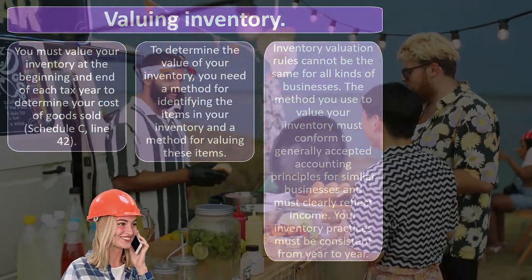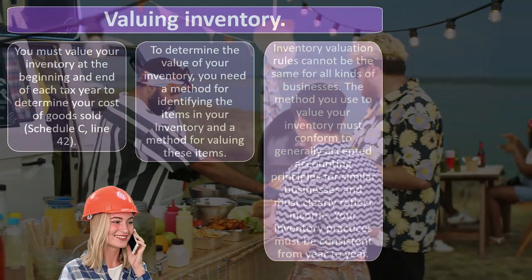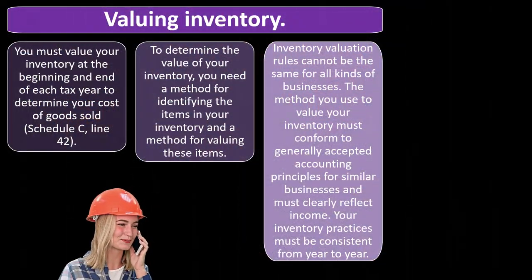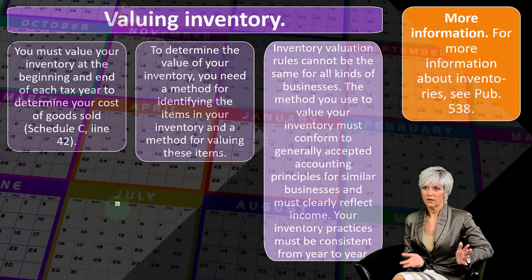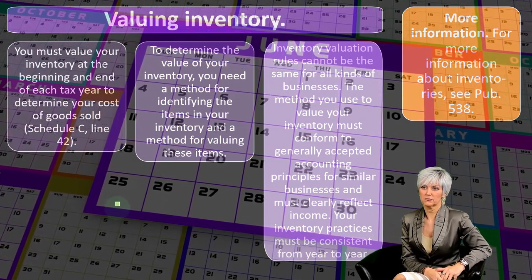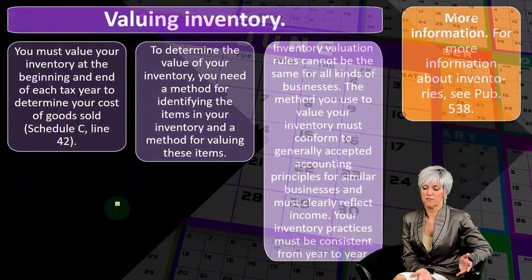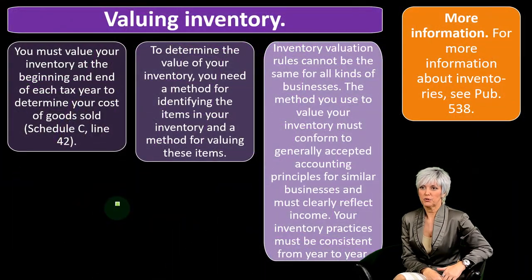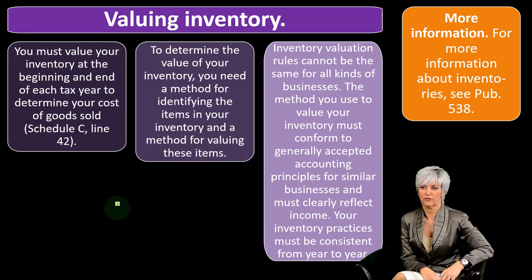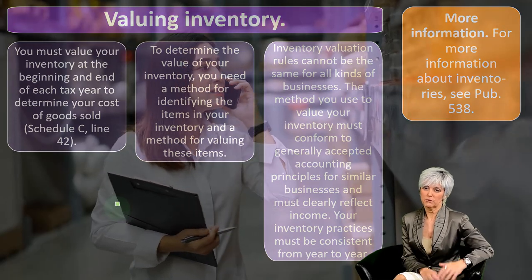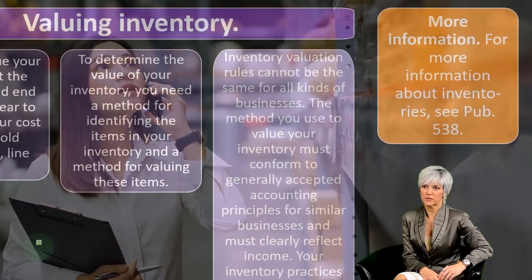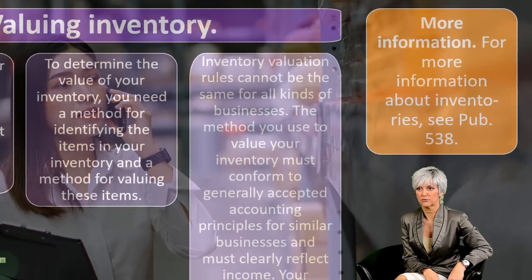The method you use to value your inventory must conform to generally accepted accounting principles for small business and must clearly reflect income. Your inventory practices must be consistent from year to year — consistency is key, otherwise there could be manipulation. For example, if you changed your flow assumption from first-in first-out to last-in first-out to weighted average, you could severely change the value of your inventory, which would be a manipulative thing to do. For more information about inventory, see Publication 538.